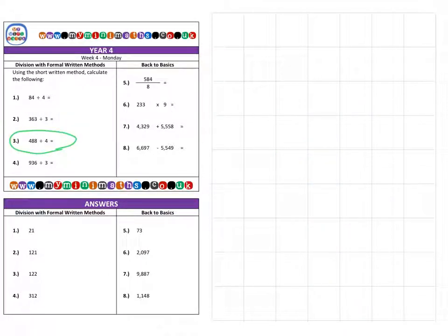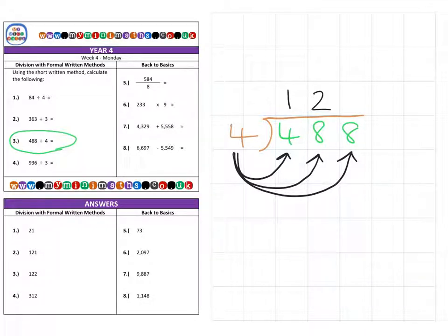Next, question three. We're going straight into the short method now. 488 divided by 4. Let's say 488 biscuits shared between four different schools. Fours into 400 goes 1 for 100 in the hundreds column. Four into 8 goes 2 for 20 in the tens column. Four into 8 goes 2 for a final answer of 122.